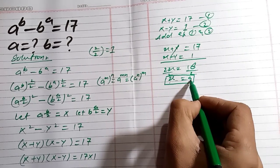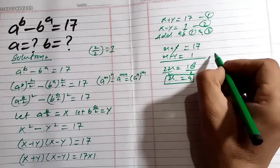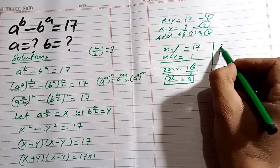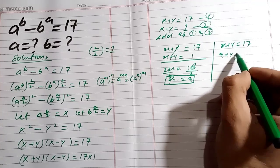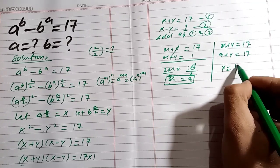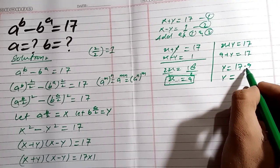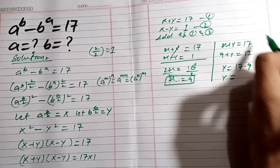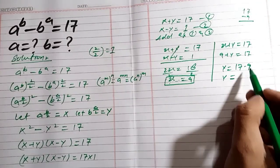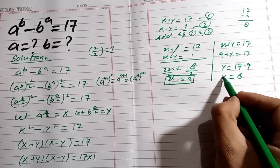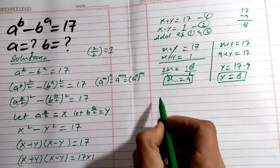Now we put the value of x into equation 1. We have x + y = 17, and substituting x = 9 gives 9 + y = 17. Therefore y = 17 − 9, so the value of y equals 8. We now have x = 9 and y = 8.